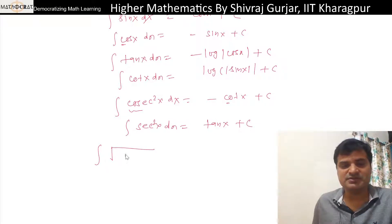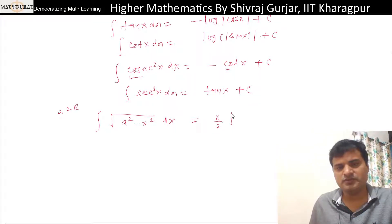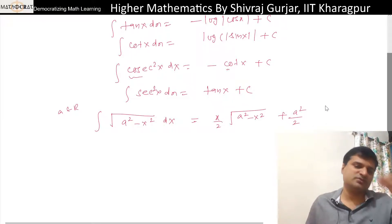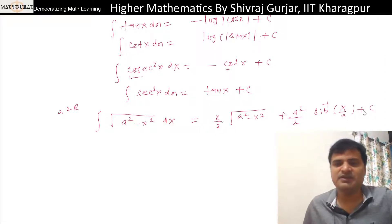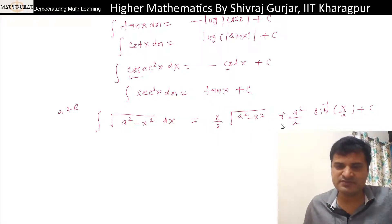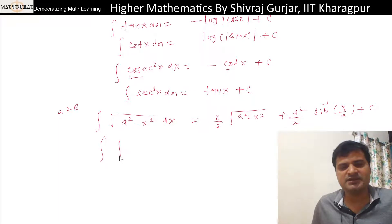This formula is important. Integral of root a square minus x square dx, where a is some real number, comes out to be x by 2 root a square minus x square plus a square by 2 sine inverse x by a plus C. Sometimes confusion arises whether it is plus or minus. You can verify by putting values. If we put a square here, the sign remains the same.